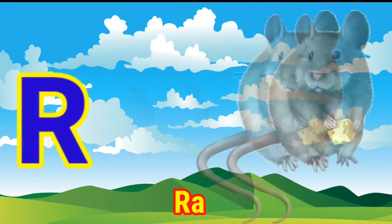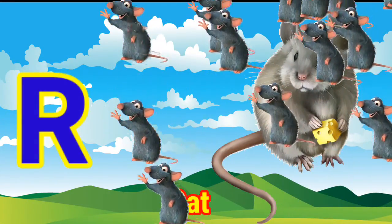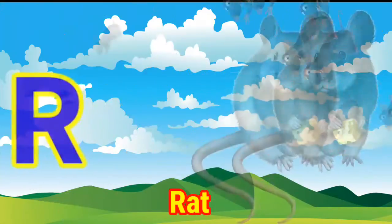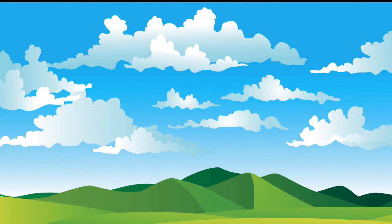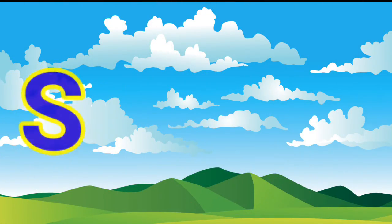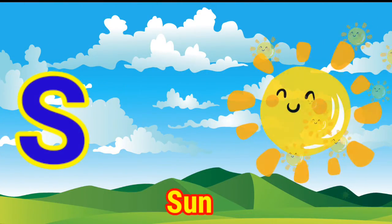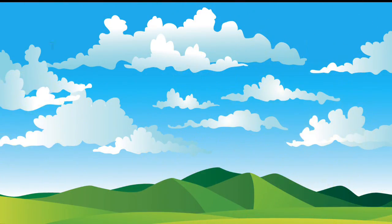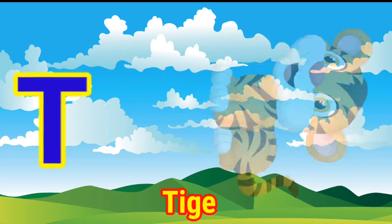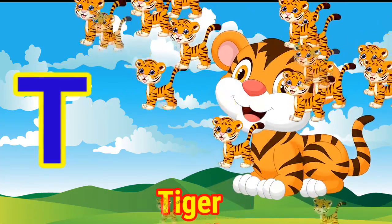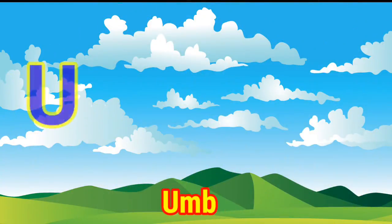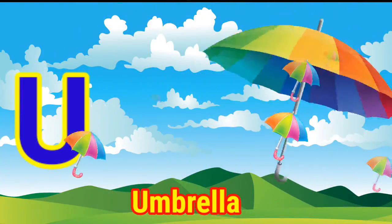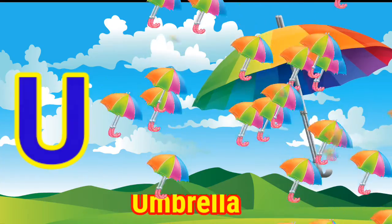R for red, S for sun, T for tiger, U for umbrella.